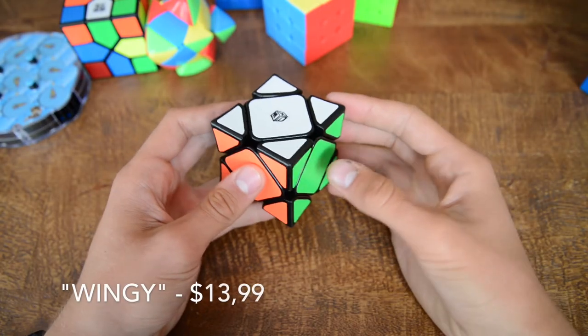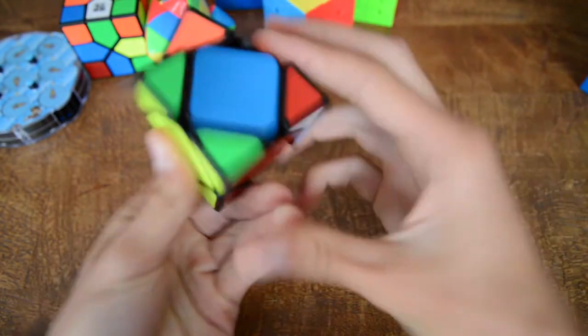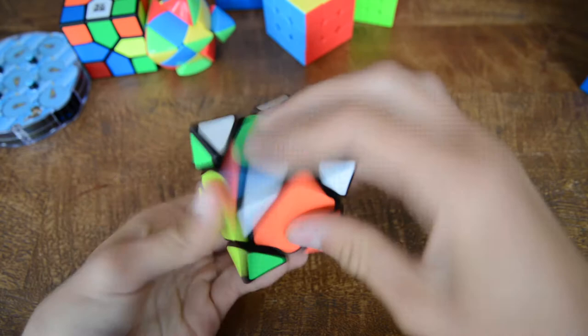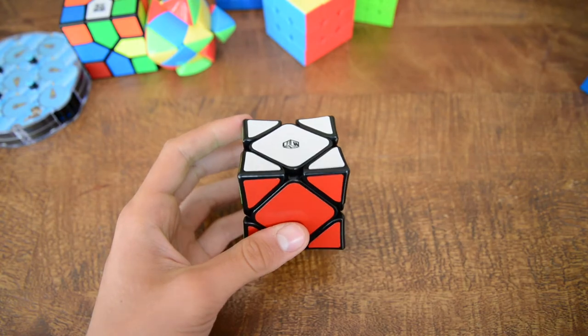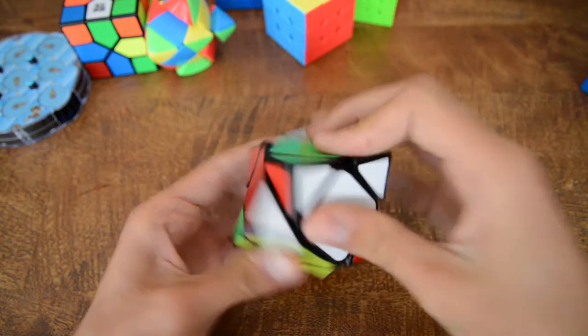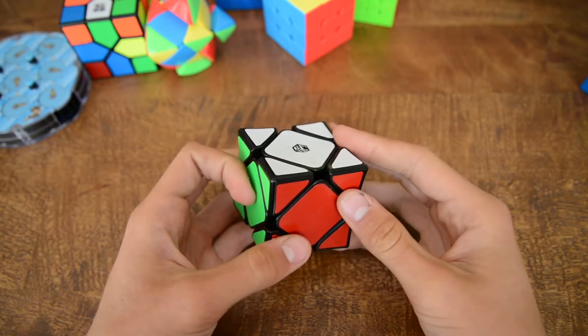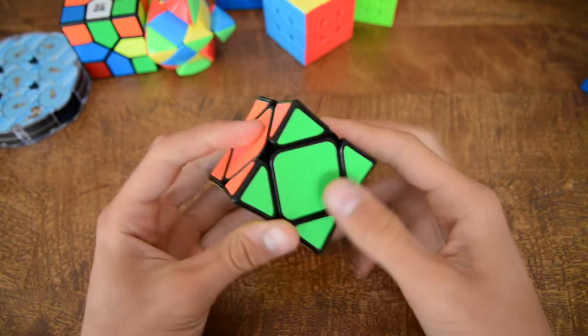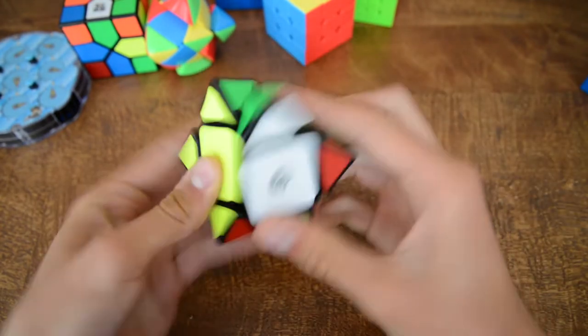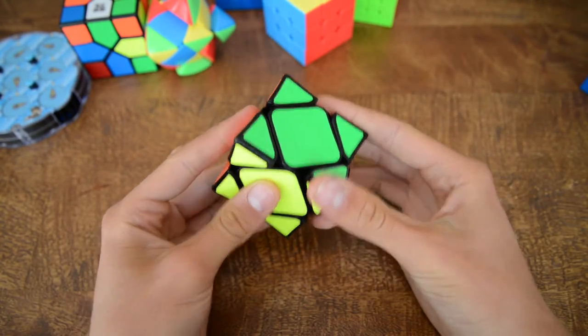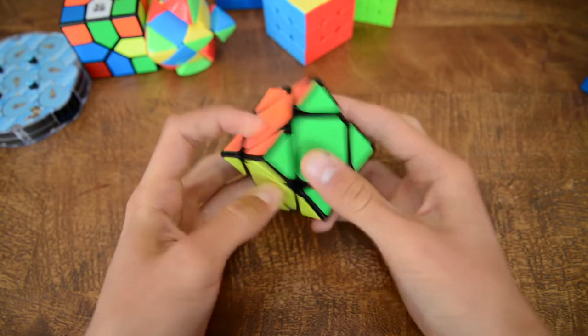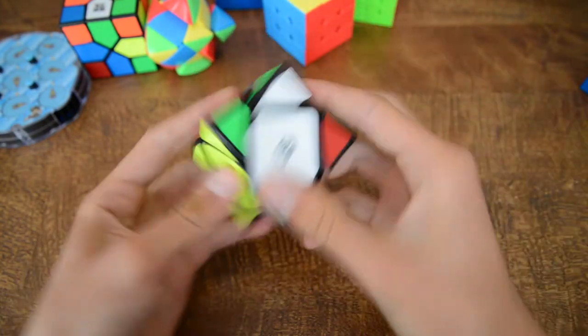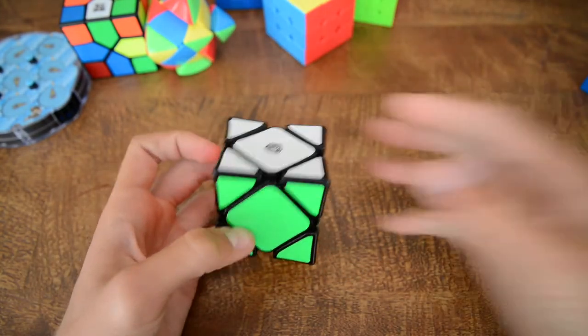So next up we have the X-Men Wingy skewb. And this is a really nice puzzle. It is an amazing cube. I got a 5.7 average of 100. And that is incredibly fast. And I've got to say, it is a really good cube. Although the reverse corner cutting sometimes locks up. And it is really unsatisfying to do the U-perms sometimes because they sometimes lock up. But after all, I'm really happy with this puzzle.